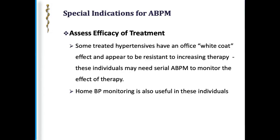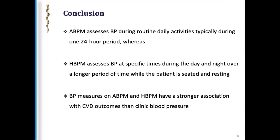Other conditions for which you would ask for ambulatory blood pressure monitoring include assessing the efficacy of treatment. If someone has an office white coat effect and you are trying to see whether they are really responding well to treatment, that is a time to ask for ambulatory BP. To conclude: ambulatory blood pressure monitoring assesses blood pressure during routine daily activities, typically over 24 hours. Home blood pressure monitoring assesses blood pressure at specific times during the day and night.